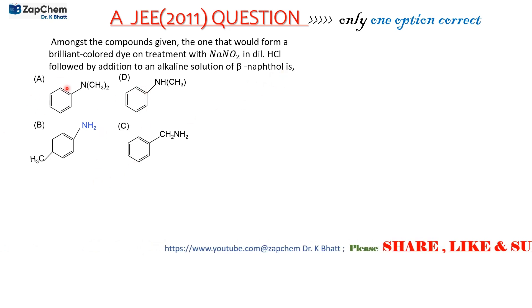We need to know the reaction with sodium nitrite in dilute HCl. These are all aromatic amino compounds, and these compounds are easily diazotized in dilute HCl at a low temperature of 0 to 5 degrees Celsius.